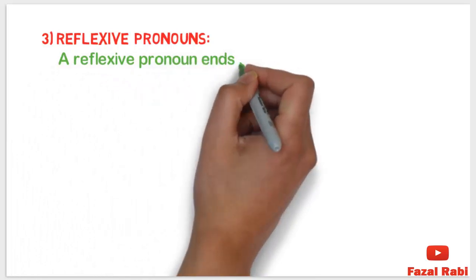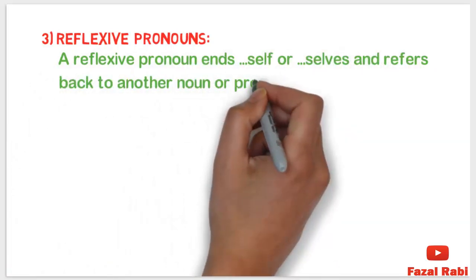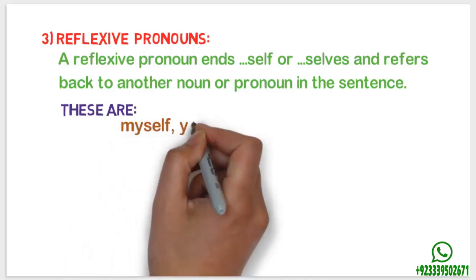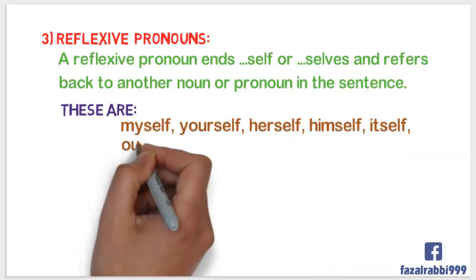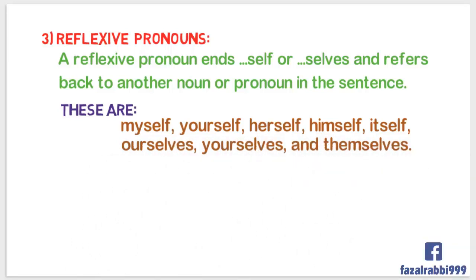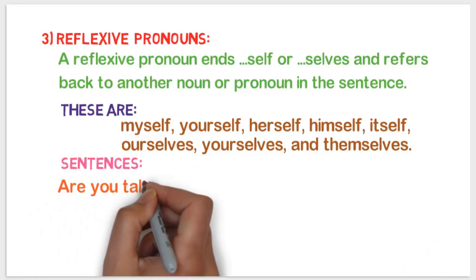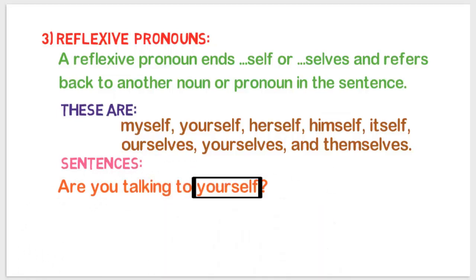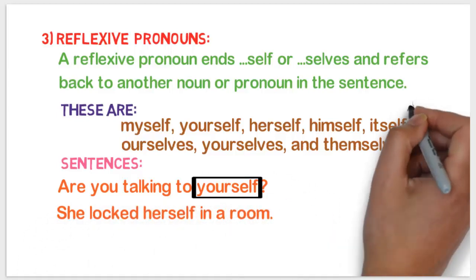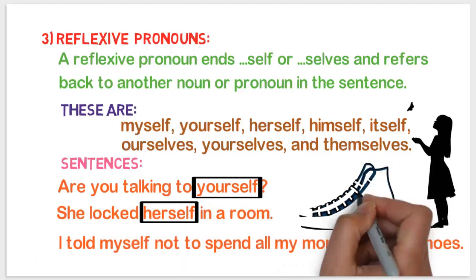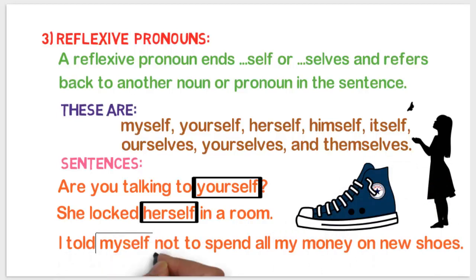Number three: reflexive pronouns. A reflexive pronoun ends in -self or -selves and refers back to another noun or pronoun in the sentence. These are myself, yourself, herself, himself, itself, ourselves, yourselves, and themselves. For example: 'Are you talking to yourself?' — yourself is a reflexive pronoun. 'She locked herself in a room' — herself is a reflexive pronoun. 'I told myself not to spend all my money on new shoes' — myself is a reflexive pronoun.